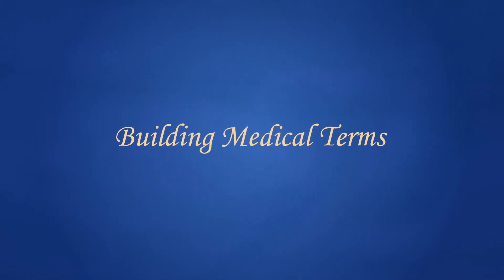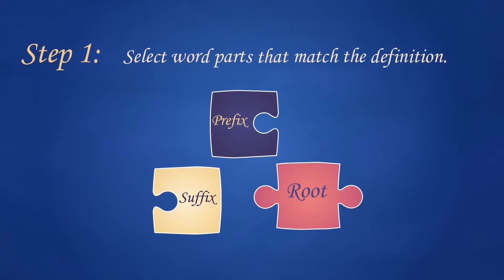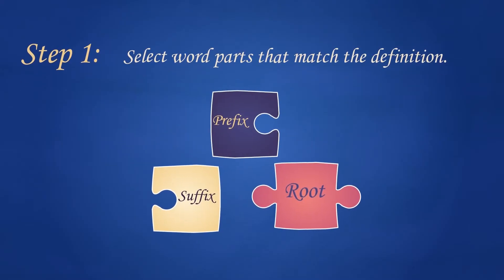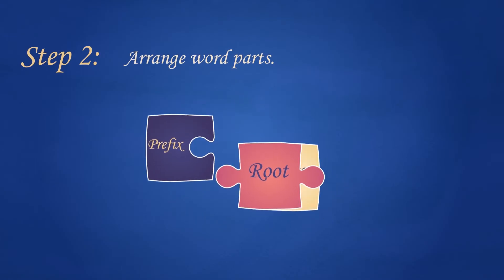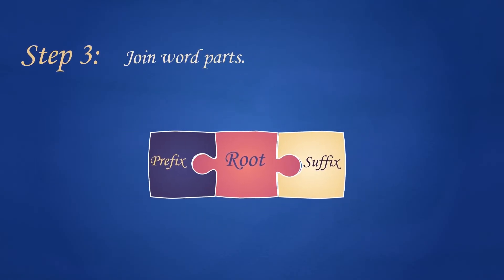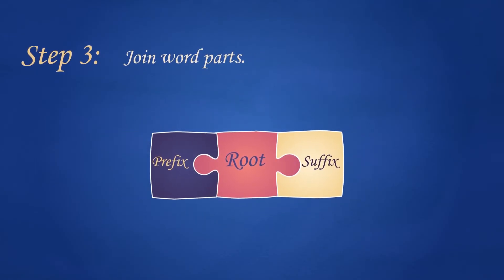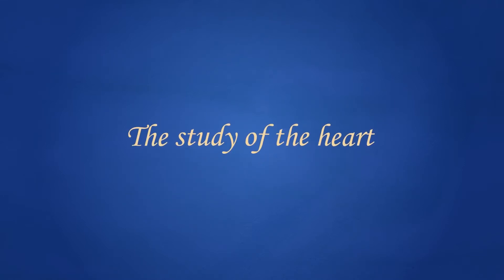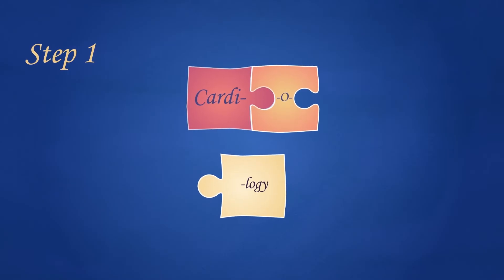Now let's build some medical terms. To build a medical word, begin with its definition. Select word parts that match that definition and put the word part puzzle pieces together in the correct way. Let's say you want to build a medical word with this definition: the study of the heart. Step 1: Select the suffix and combining form whose meanings match the definition of the medical word.